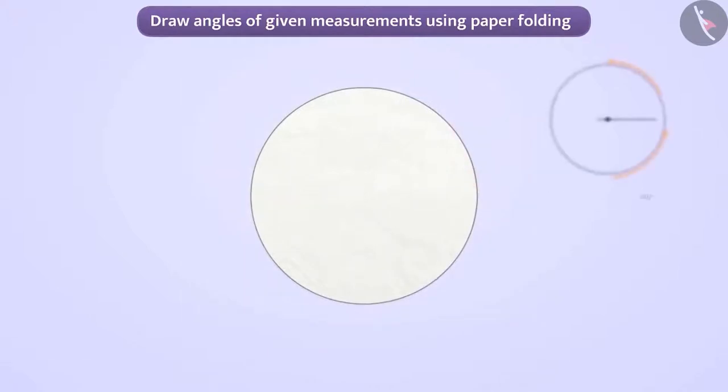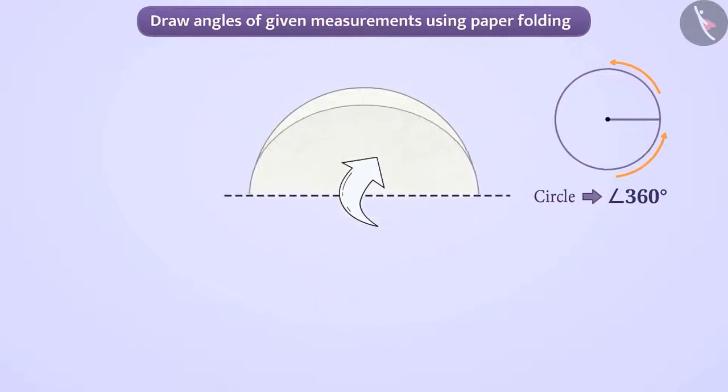Do you remember that the circle is an angle of 360 degrees? If we fold the circle in half, we will get an angle of 180 degrees.